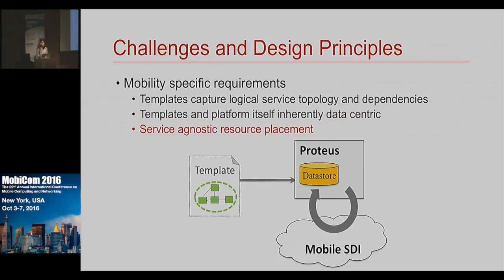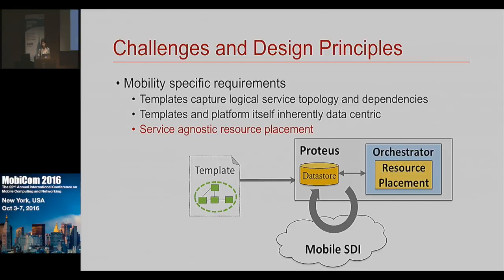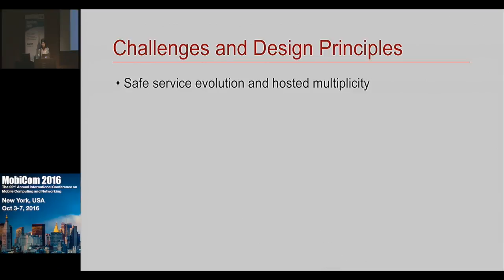Proteus is also responsible for performing resource placement, since mobile network services often have sophisticated resource placement requirements. For example, a service provider might specify a policy that they want new resources deployed where they have most of their customers. The orchestrator has a resource placement module built in with a constraint solver, and templates can specify resource placement requirements using a language expressive enough to capture such details.